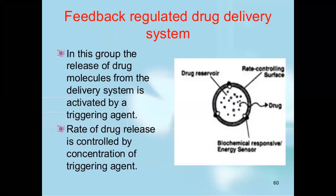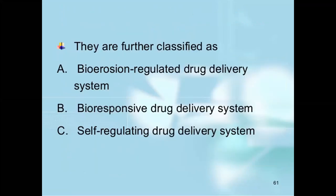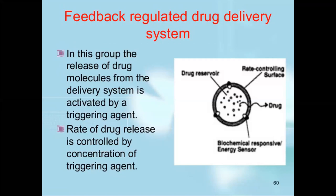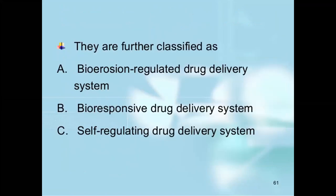This is the feedback-regulated drug delivery system. In this group, the release of drug molecules from the delivery system is activated by a triggering agent, and the rate of drug release is controlled by the concentration of that triggering agent — this is called a pulsatile drug delivery system. When we talk about feedback-regulated drug delivery systems, there are three types: bio-erodible drug-regulated drug delivery system, bio-responsive drug delivery system, and self-regulated drug delivery system.